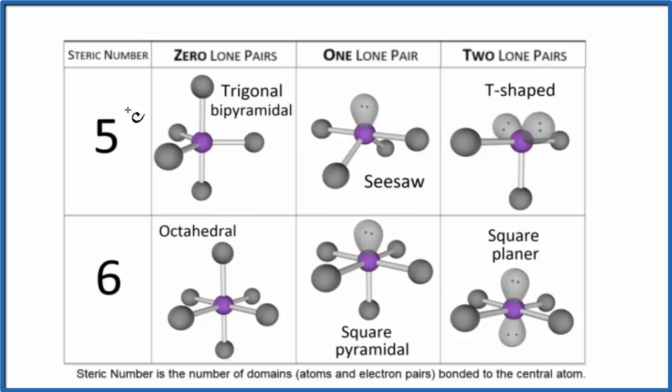So our steric number was five. We had two lone pairs. So we go over here, and we have what's called a T-shaped molecular geometry. It'll be approximately like this here. For the bond angles, this would be about 90. I believe the actual value for this compound is 87.5 degrees.